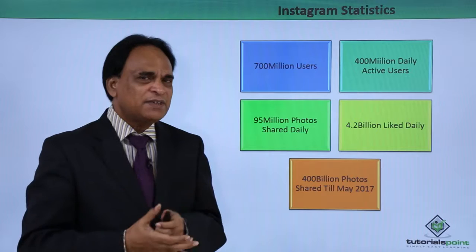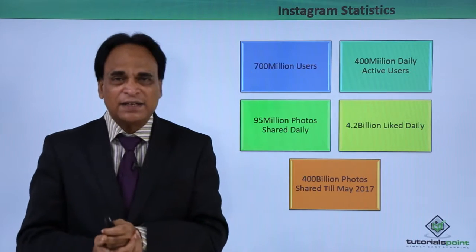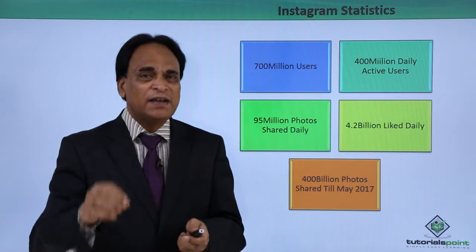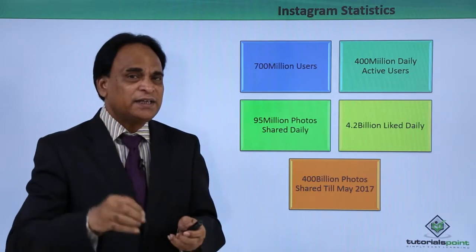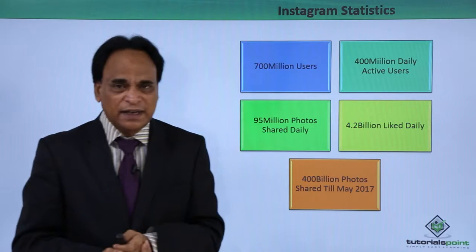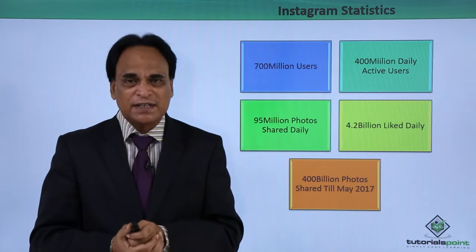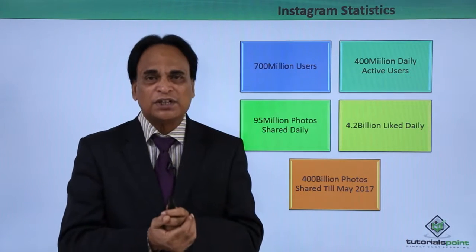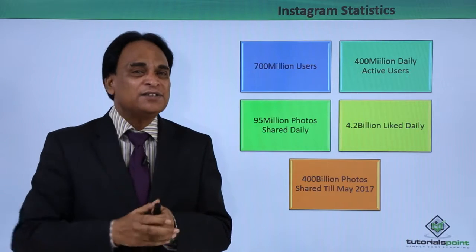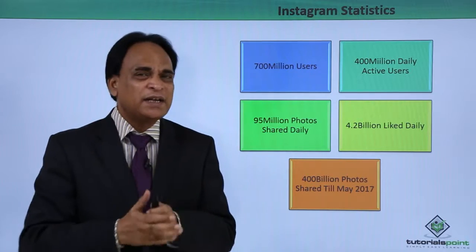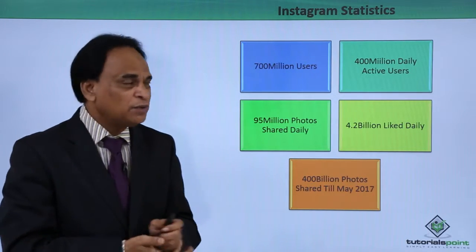Let us start with Instagram statistics. There are over 700 million users on Instagram right now according to the latest numbers. There are 400 million daily active users engaging and interacting every single day. 95 million photos are shared daily on Instagram. There are 4.2 billion likes daily. 400 billion photos have been shared till May 2017. Just imagine the scale and magnitude to which Instagram has grown over the years. The number of users is growing at an alarming rate, and you cannot stay away from Instagram if you are a serious business looking to drive traffic and generate more revenue.